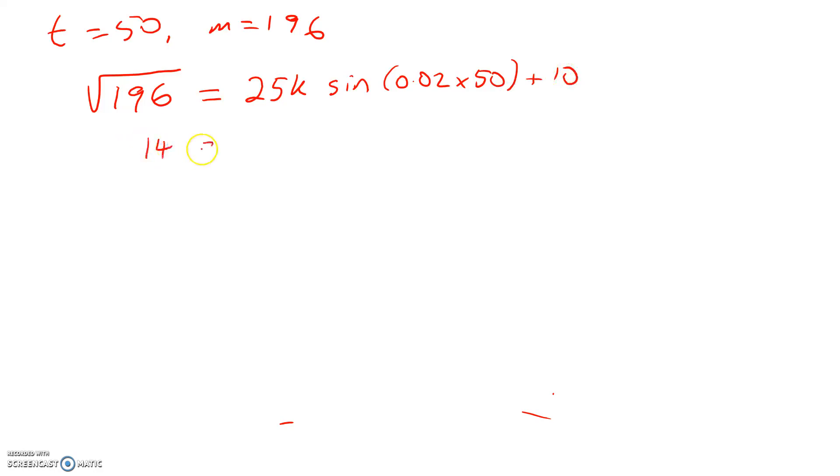That gives me 14 is equal to 25k sin(1) plus 10. Now, just be really careful that your calculator is set into radians, because whenever we're differentiating, we can't be working in degrees or it all goes bad. What does that leave me with? Well, I've got 4 over 25 sin(1) is equal to k. So if you work that through on your calculator, k works out to be 0.190143.